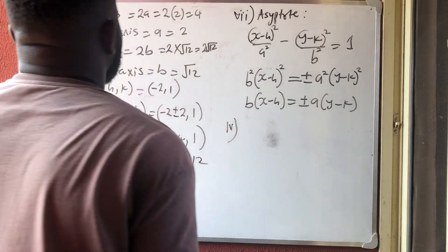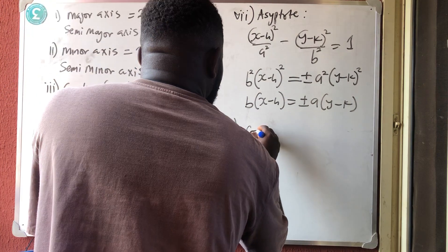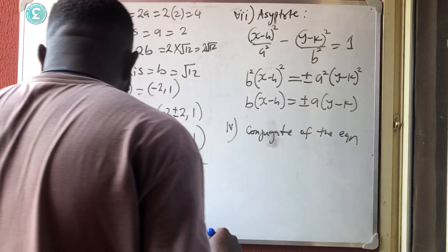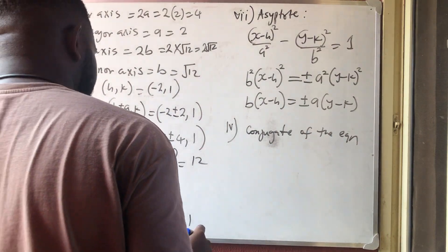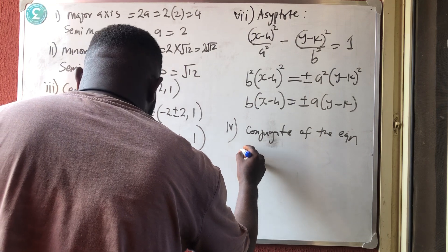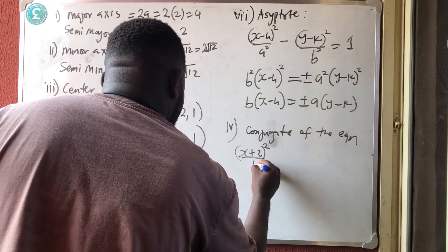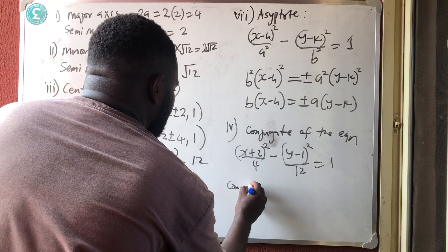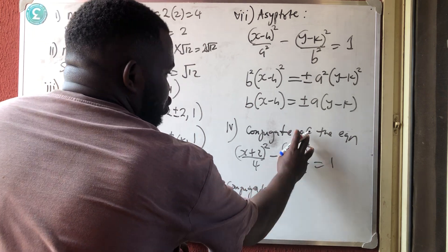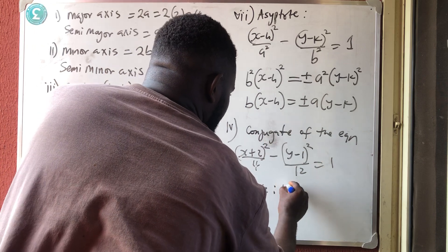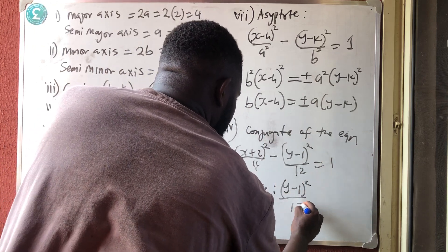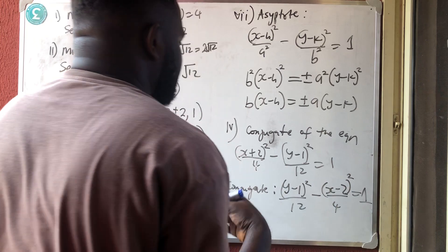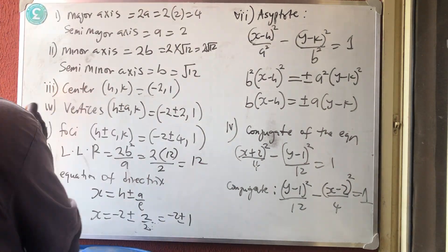The conjugate of the hyperbola is found by swapping the two terms. The original equation was (x + 2)²/4 − (y − 1)²/12 = 1, so the conjugate equation is (y − 1)²/12 − (x + 2)²/4 = 1.